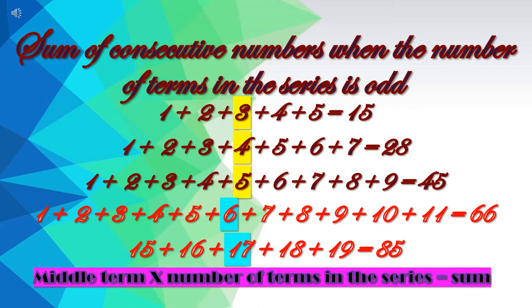The sum is 15 — three 5s are 15. In the next series I have taken 7 numbers, and the middle number here is 4. So 4 multiplied by 7 is 28, meaning 1 plus 2 plus 3 plus 4 plus 5 plus 6 plus 7 equals 28. In the next series I have taken 9 numbers, and the middle number is 5, so 5 multiplied by 9 is 45.